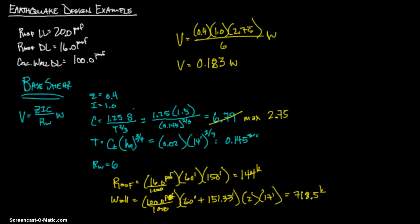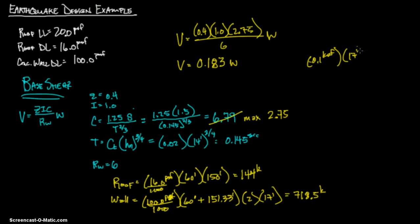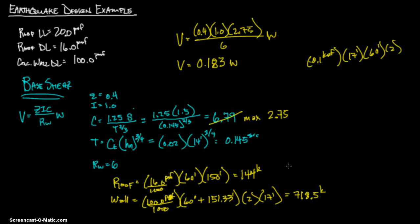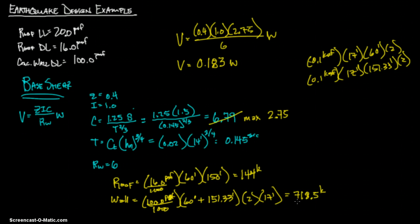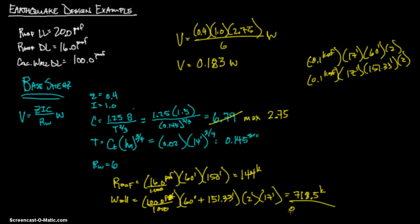Adding the roof load and wall load together: 144 plus 718.5 gives a total dead load W of approximately 862.5 kips.